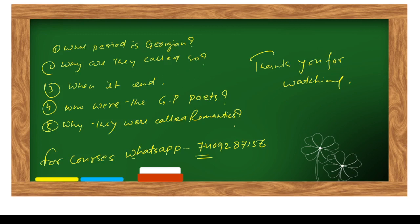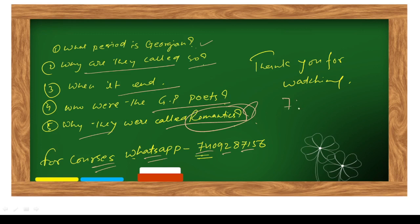So hopefully you understood what period is Georgian period, why they are called Georgian poets, when it ends, who were the Georgian poets, and why they were called romantics. If you are interested in any kind of course or PDF notes, you can WhatsApp on our number 7409287156. Thank you for watching. See you tomorrow at 7:30 PM sharp. If you are visiting our channel first time, you must know that we have English literature class daily at 7:30 PM.